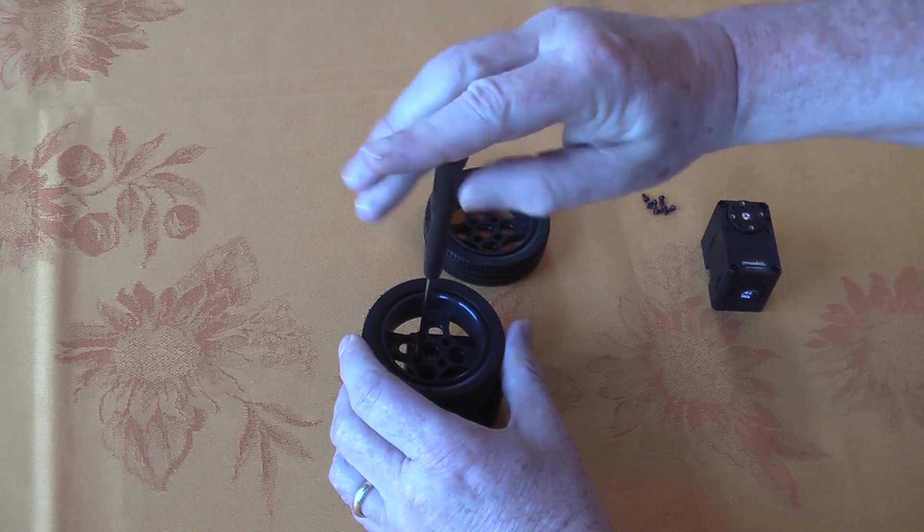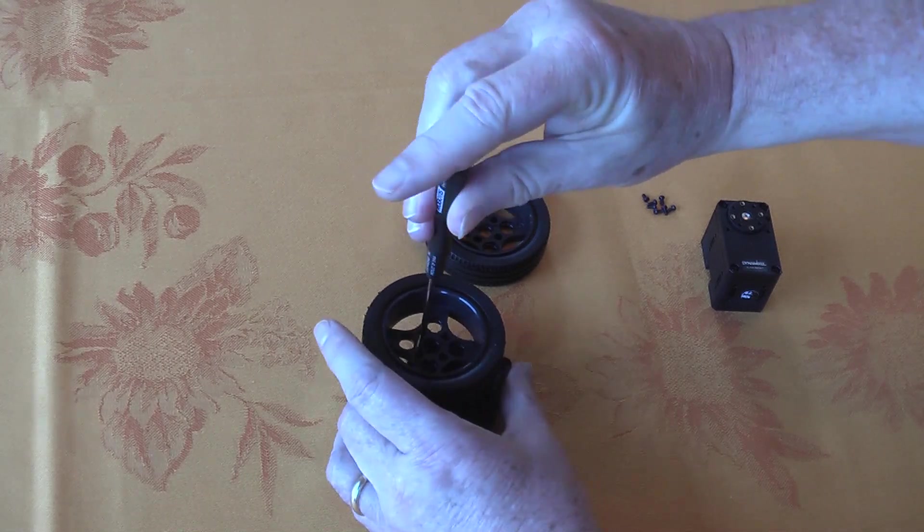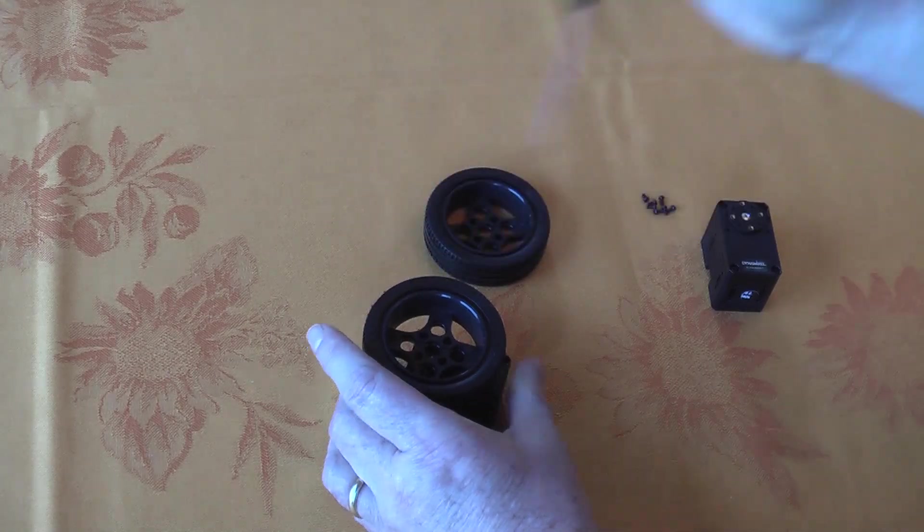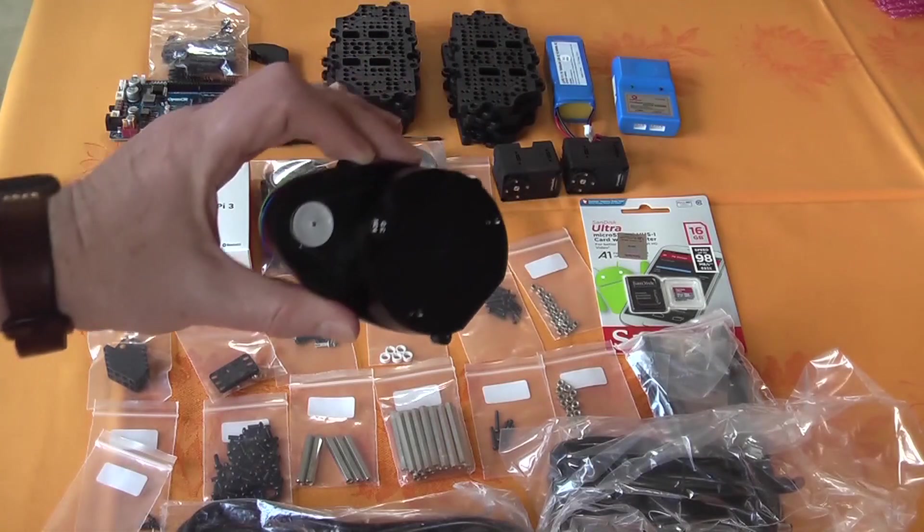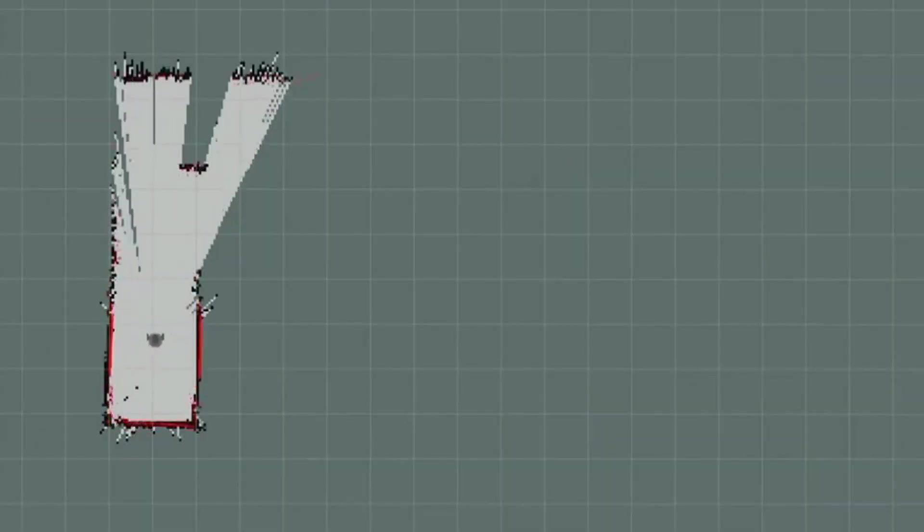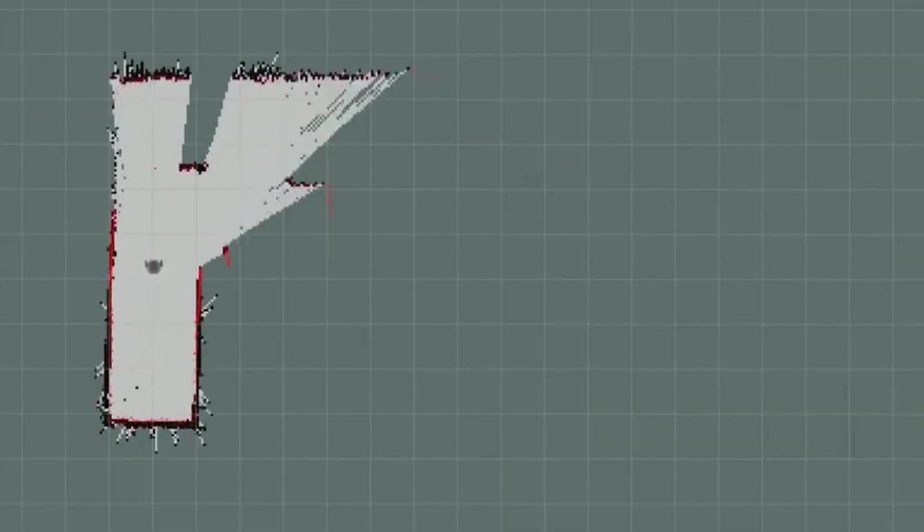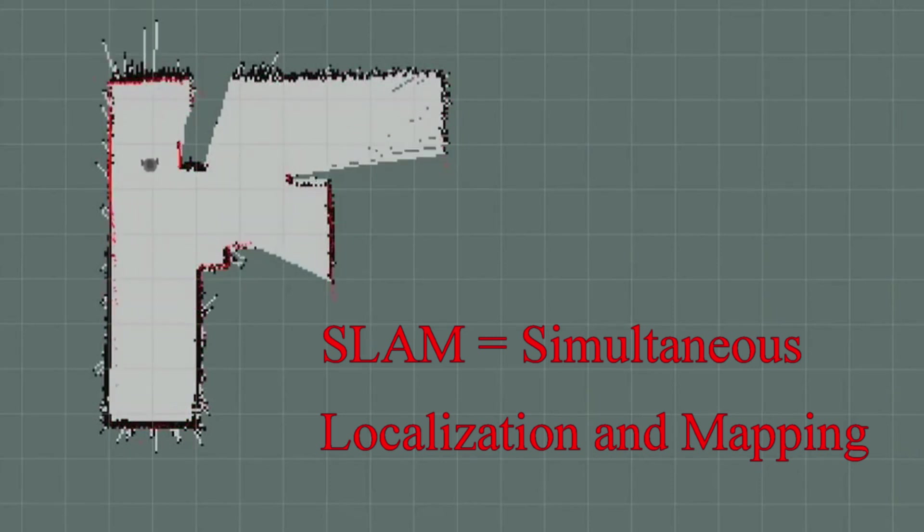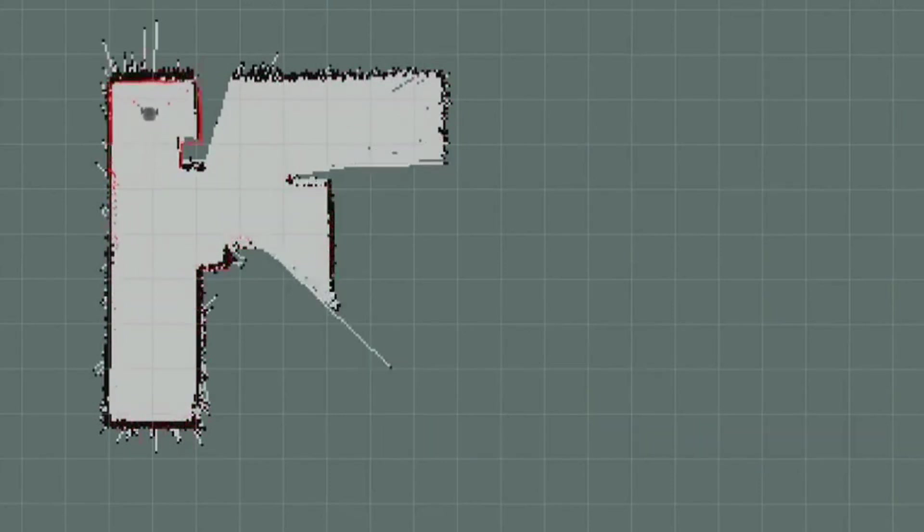The wheels on the TurtleBot are driven by Dynamixel motors. The TurtleBot navigates with two wheels and a ball roller. The TurtleBot 3 Burger Kit also comes with a 2D LiDAR that spins 360 degrees for SLAM and navigation functions. SLAM stands for Simultaneous Localization and Mapping, which helps the TurtleBot learn its environment.